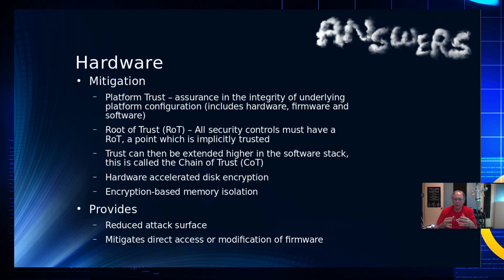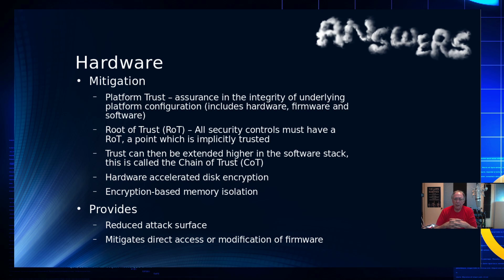All security controls must have an ROT — a root of trust — and that is an implicitly trusted zone. This particular piece I trust implicitly, and it forms the basis of a chain of trust which extends up higher into the hardware, firmware, and software stack. That is called the chain of trust.